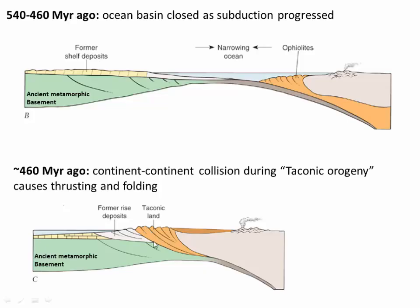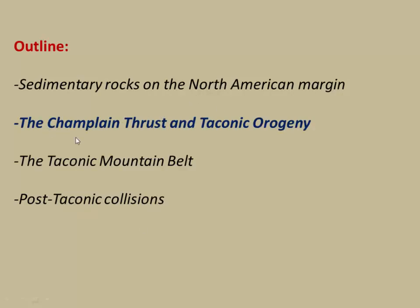Like we've seen in previous videos, this continent-continent collision caused a lot of thrusting. So we had a lot of thrust sheets in place and also a lot of folding of the rocks. Obviously the passive margin was destroyed, the ocean was more or less gone, and all those sedimentary rocks were now uplifted out of the water. That brings us to a closer look at the Champlain thrust and the Taconic Orogeny.